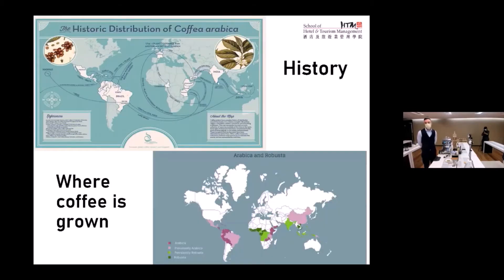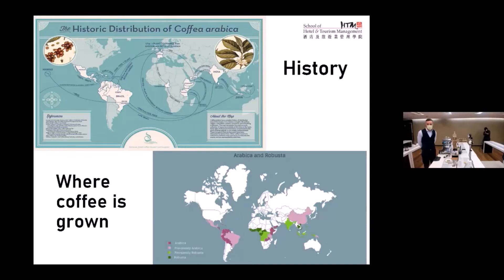Let's have a look at the map first. Coffee actually first originated from a few different places, and a lot of people don't really know where it came from. But the history books and most people confirmed that Arabica coffee — which is a kind of species of coffee — first originated from Ethiopia, which is on the continent of Africa. If you look at the top map on the right side in the middle, you'll see Ethiopia.